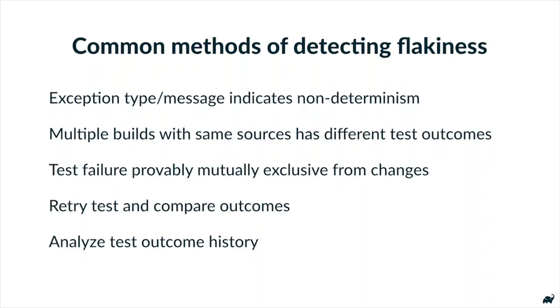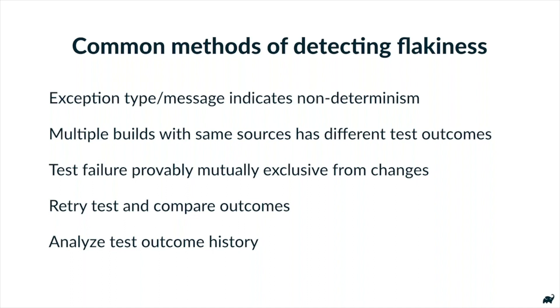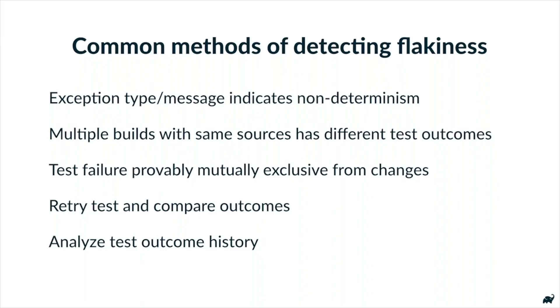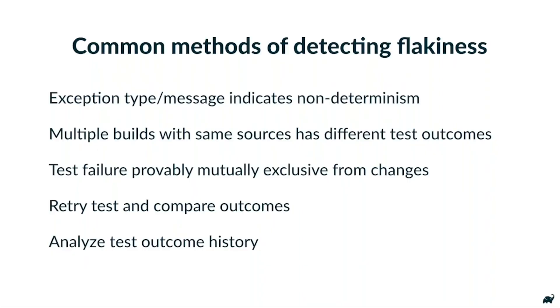Now I want to cover some common methods folks use to detect flakiness. Sometimes it's obvious to engineers — if you look at test outputs and see an out-of-memory error, you say well that's not going to happen on most every test run. Some systems track git commits and mark a test as flaky if it's executed in multiple builds against the same commit but has different outcomes. More specialized systems can take a git patch and a failed test and determine whether the patch could have caused the failure. Most organizations run a test multiple times and compare outcomes, while some try to compute a flakiness factor by analyzing just the test outcome history regardless of other factors.